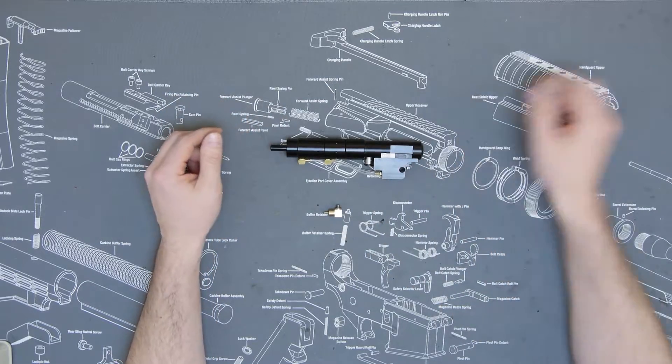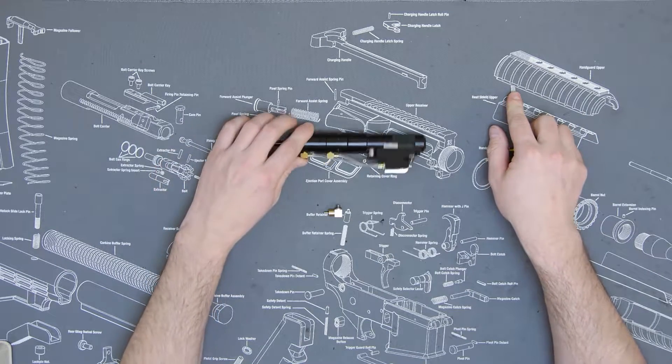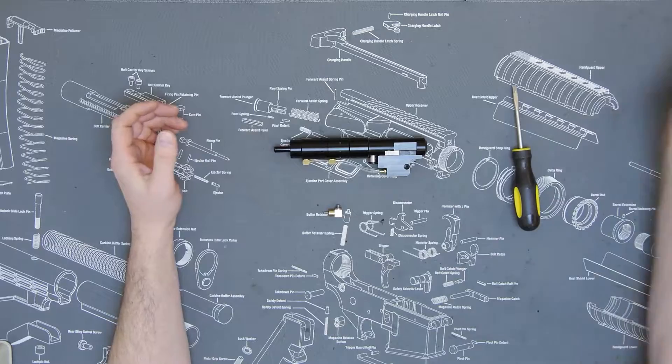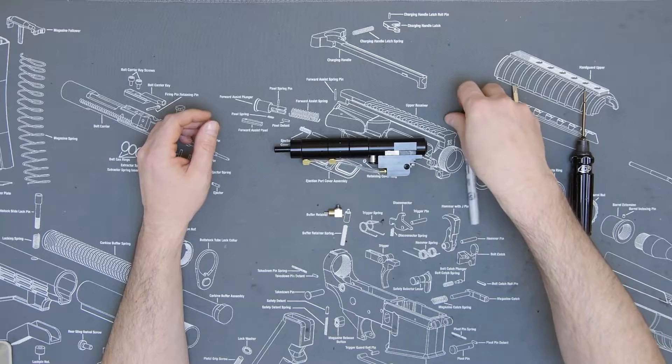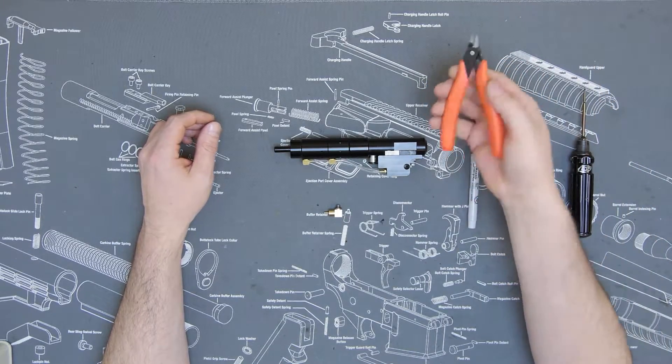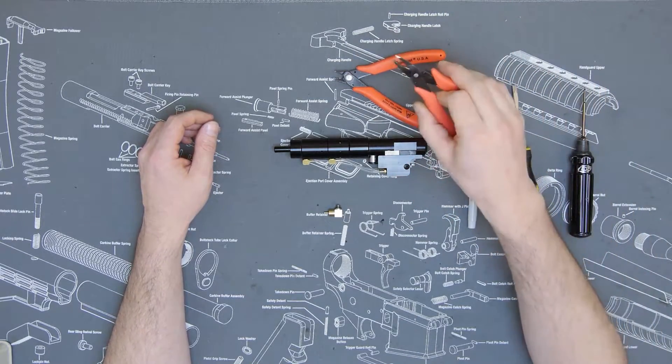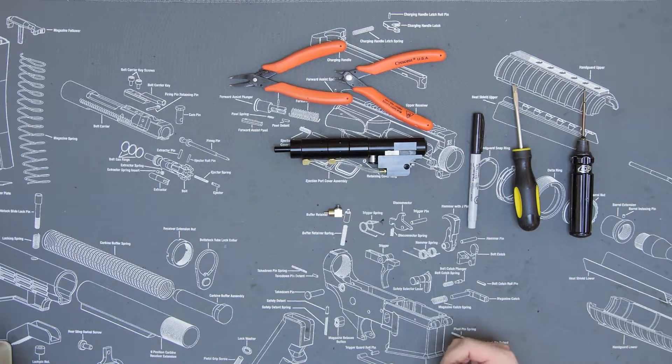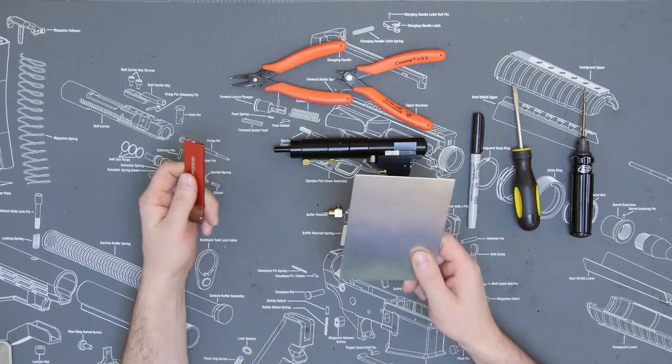Some of the tools we're going to need for this are a flathead screwdriver—make sure you get the appropriate width for your banjo fitting so that you don't damage the screw—a 1.5 millimeter hex, a fine tip Sharpie, a pair of snips or cutting implements, pliers if you want to pull the banjo off the line, and my preferred method which would be a razor knife and a cutting surface.